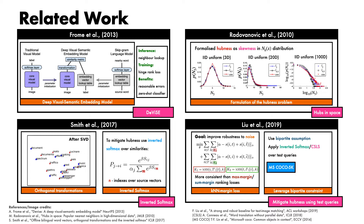They show that on benchmarks such as MSCOCO 5K, relative to a naive nearest neighbour baseline, use of inverted softmax and CSLS bring a major boost. One limitation of this work is that it requires concurrent access to the set of test queries, which may not be a practical requirement for real-world retrieval systems in which users do not submit their queries at the same time, or systems for which we cannot be sure that there is a one-to-one matching between text queries and gallery images. One contribution of the query bank normalization paper is to demonstrate that concurrent access to test queries is not required to mitigate hubness effectively.